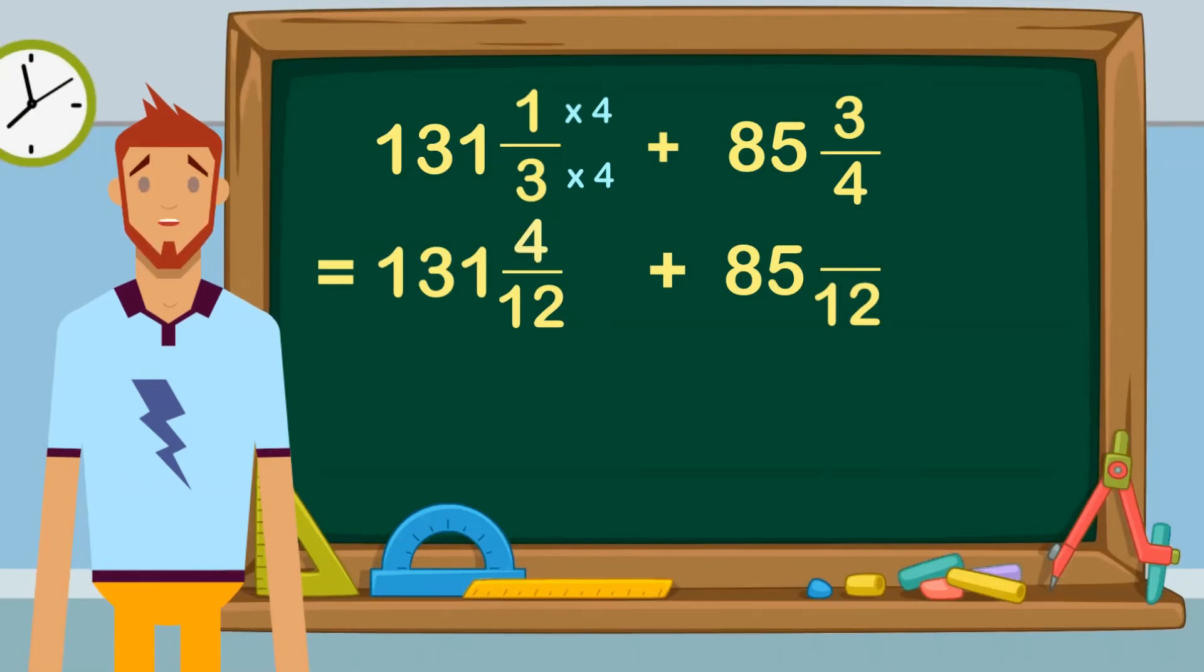4×3=12, so we also need to multiply the numerator by 3 to get 9. Our second fraction is now 85 and 9/12.